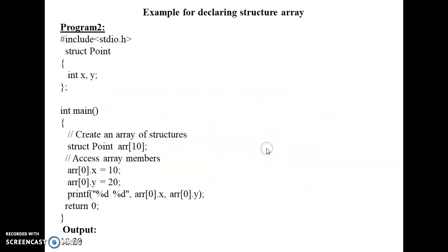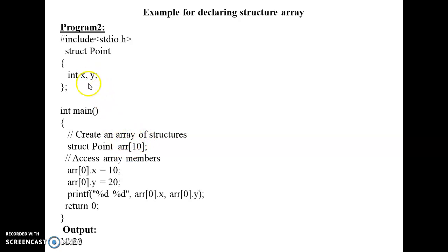Here is a program example declaring a structure array. The structure name is 'point' with two integer members, x and y. The structure variable is declared as an array type. To access members, we use the dot operator: 'array[0].x = 10' and 'array[0].y = 20'. Then we print these values, so the output will be 10 and 20.